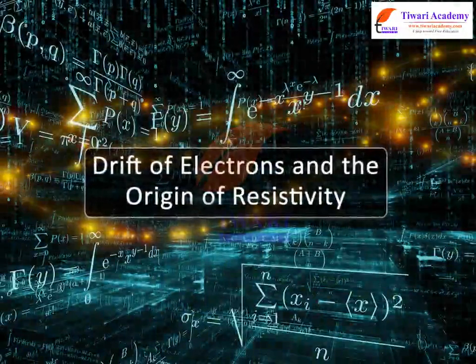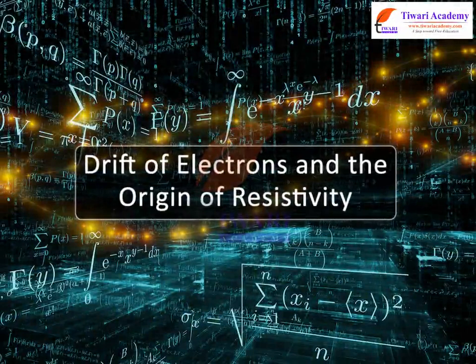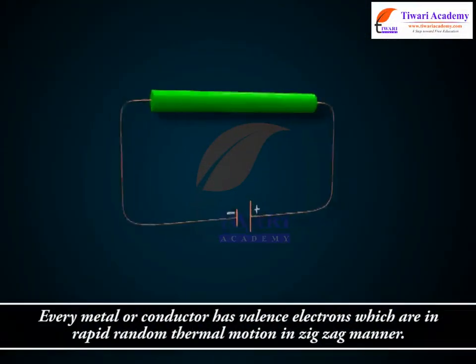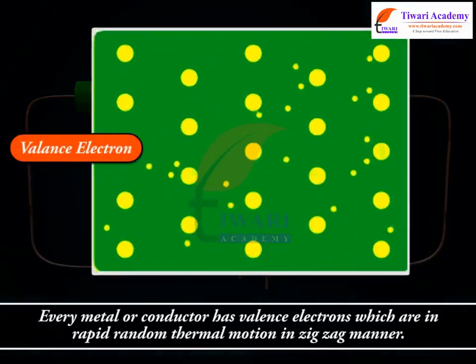Drift of electrons and the origin of resistivity. Every metal or conductor has valence electrons which are in rapid random thermal motion in zigzag manner.